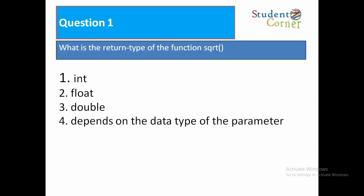What is the return type of the function sqrt? Option 1: int, option 2: float, option 3: double, option 4: depends on the data type of the parameter. Answer is double.